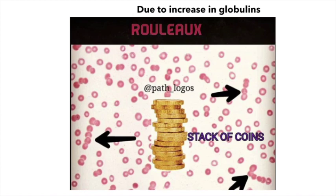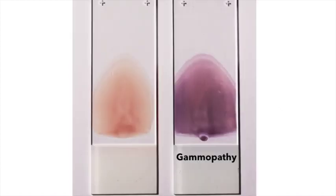It is important to note that rouleaux formation not only occurs in multiple myeloma but also in infections due to an increase in fibrinogen. The difference is that in multiple myeloma, the rouleaux formation is due to an increase in the globulin protein from secretion of immunoglobulin by plasma cells, while in infections the increase in fibrinogen is responsible for rouleaux formation.